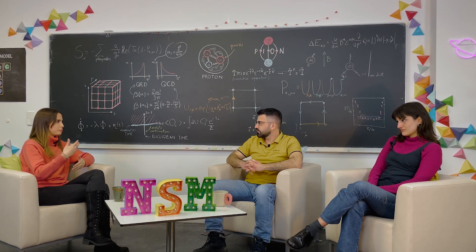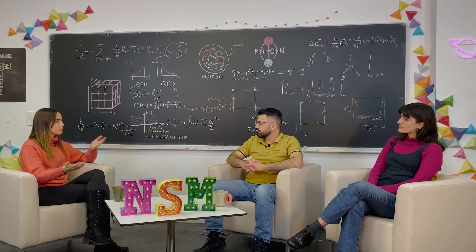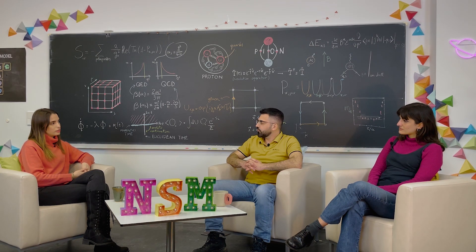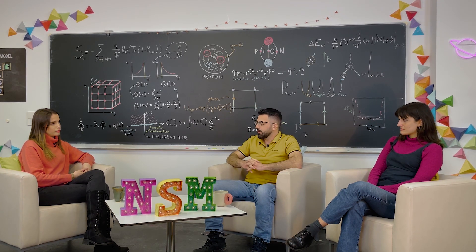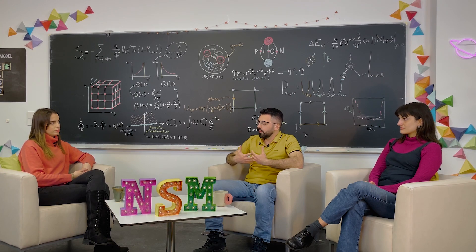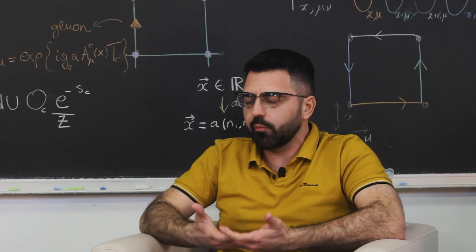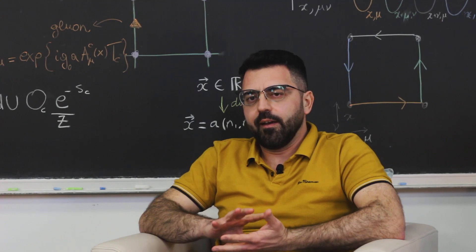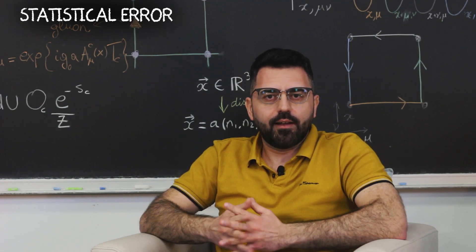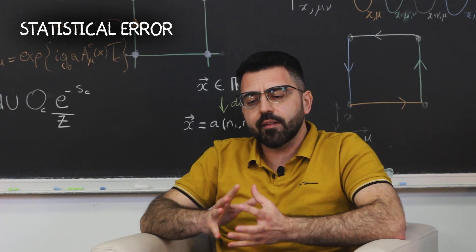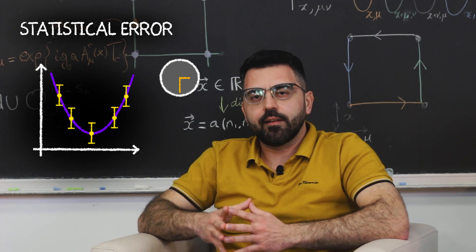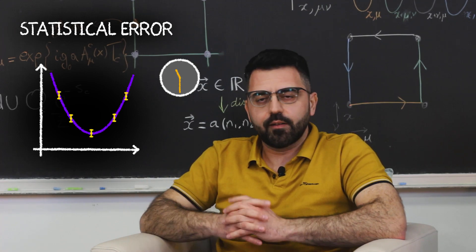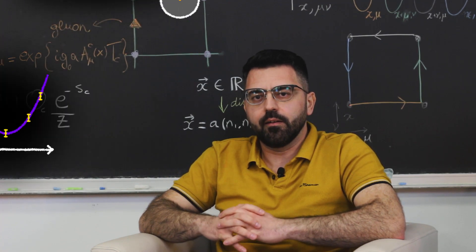It sounds like you're doing multiple experiments by running these multiple simulations. Is there an equivalent of experimental uncertainties? Yes, absolutely. We need to consider that we have statistical errors. This happens because, as Ilaria explained, the algorithms that we use are probabilistic. So if we're interested in a given physical observable, we actually get only a probabilistic estimate of it, and this comes with a statistical error. If we run our simulation for longer, the statistical errors become smaller and smaller, and this is the way in which we can keep them under control.